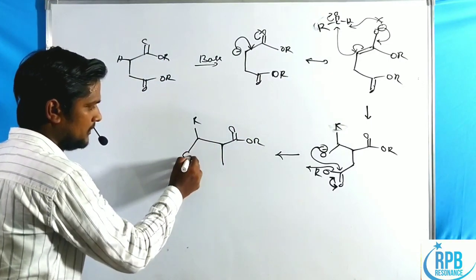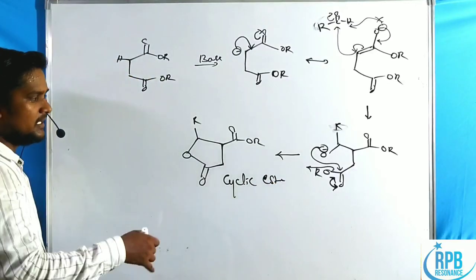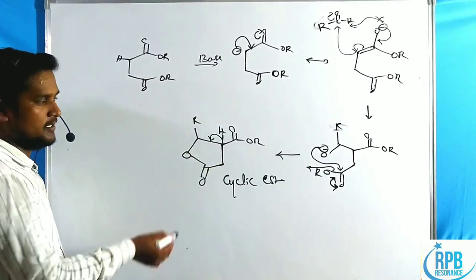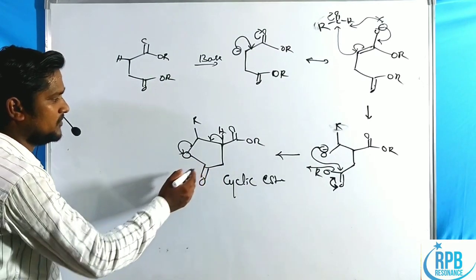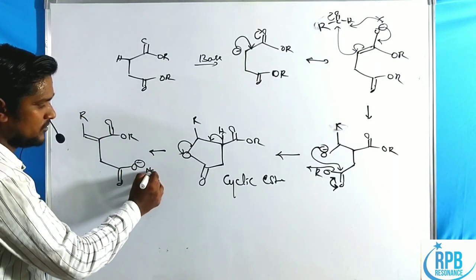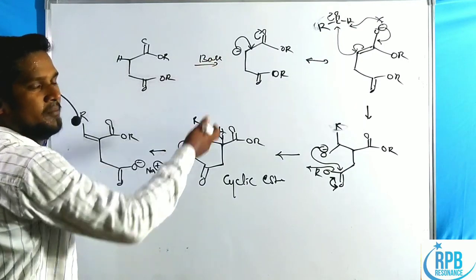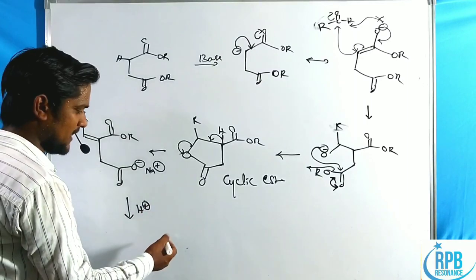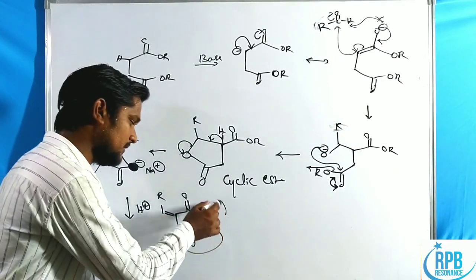In the cyclic ester, whichever proton was abstracted still has another proton at that position. That proton donates its bonded electrons, forming the new carbon-carbon double bond. The ring opens, giving C=C with COOEt and R groups. The COO⁻ picks up the cation from the base used — if sodium base was used, we get sodium cation. Upon hydrolysis, one ester becomes OH (carboxylic acid) while the other ester is retained, giving the alpha-beta unsaturated half-ester product.